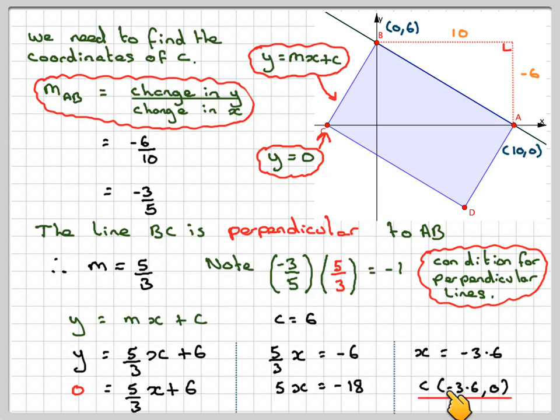So the coordinates are (-3.6, 0), because the question said to find the coordinates, not what the X value is. So make sure you write down your answer as to what the question actually says.